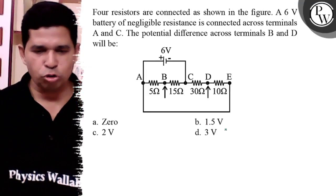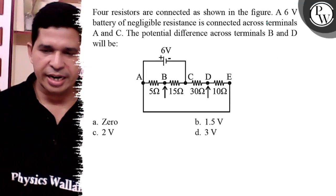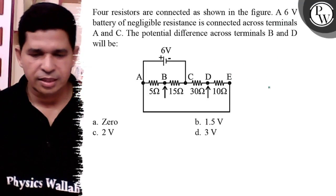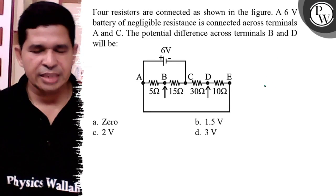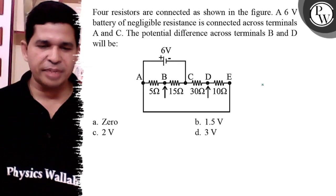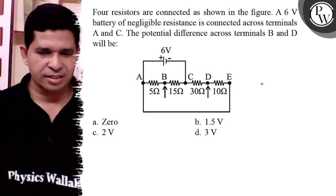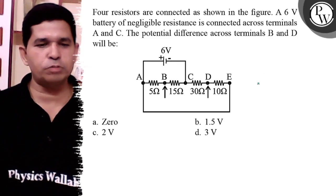Hello Bachchan, let us see this question. Resistors are connected with a 6V battery and negligible resistance is connected across terminals A and C. The potential drop across B and D will be?